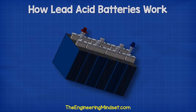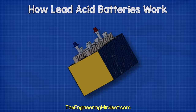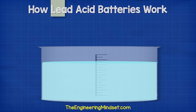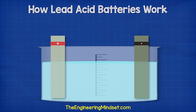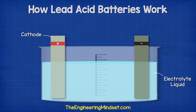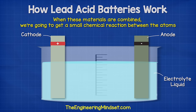Rather than trying to understand this complex construction, we're going to simplify it down to this simple model of a cell with a single cathode and anode. In this cell we have the electrolyte liquid, which is one third sulfuric acid and two thirds water. We have the positive electrode which is the cathode — this is made from lead oxide. We then have the negative terminal which is the anode, and this is made from pure lead.